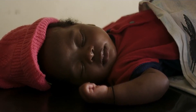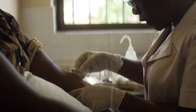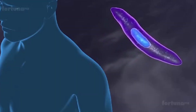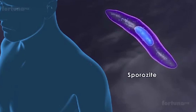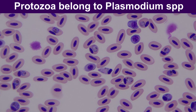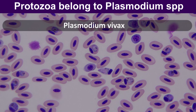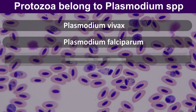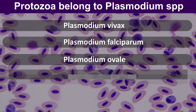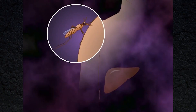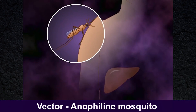Malaria is one of the serious and fatal mosquito-borne diseases caused by a protozoan parasite. This protozoa belong to Plasmodium species — mainly Plasmodium vivax, Plasmodium falciparum, Plasmodium ovale, and Plasmodium malariae. Most commonly, the vector is the Anopheles mosquito.